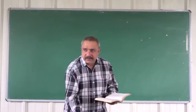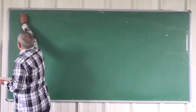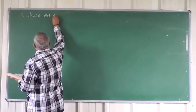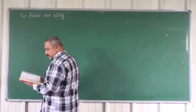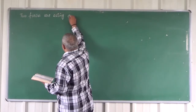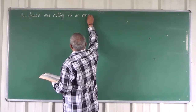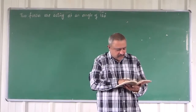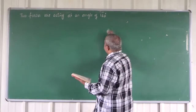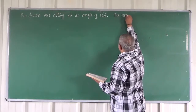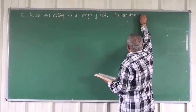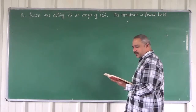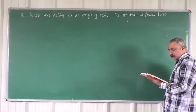Two forces are acting at an angle of 120 degrees. The resultant is found to be perpendicular to the smaller force.